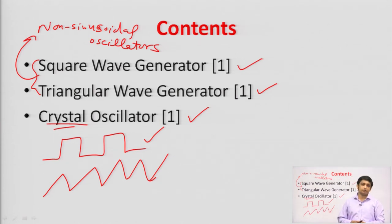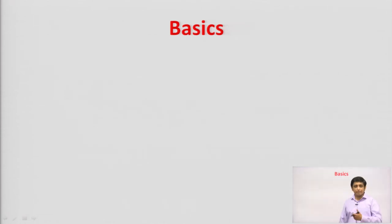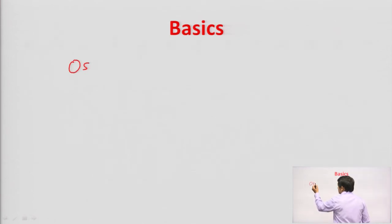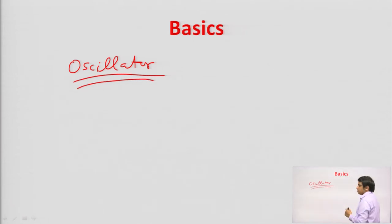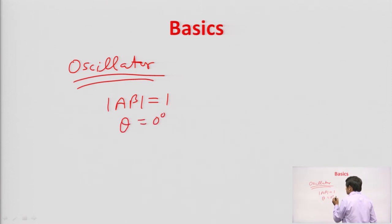That square wave is generated with the help of an oscillator. Let us start with the basics of oscillators and review them. This oscillator is a device which is used to generate a signal of a particular frequency, and basically the principle of oscillation is the Barkhausen criteria. The Barkhausen criteria is that the loop gain |Aβ| should be 1, and the phase shift around the loop should be 0 degrees or 360 degrees.